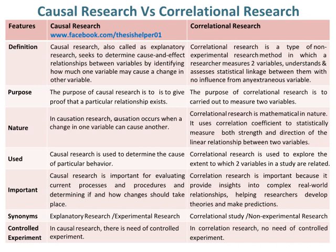In causal research, causation occurs when a change in one variable can cause another. Whereas correlational research is mathematical in nature — it uses a correlation coefficient to statistically measure both the strength and direction of the linear relationship between two variables.